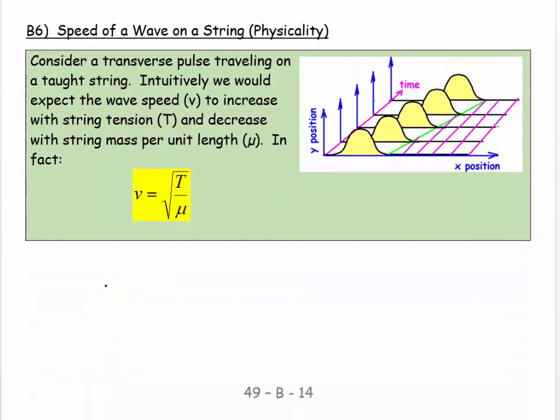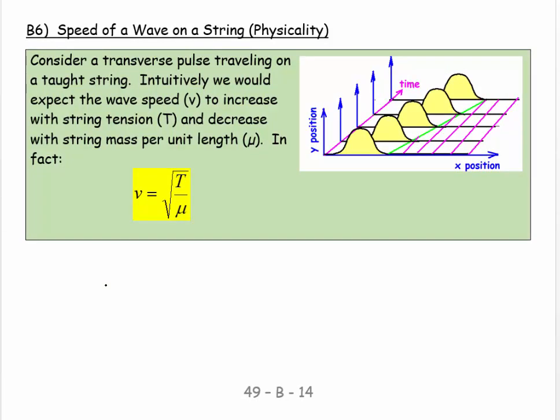We're going to look at a wave going along a string. I'm showing it as a pulse, but it need not be. It could be anything. And it's going along this wire, this string, and at beginning time it's near the beginning and then as time passes it goes further and further down. We say consider the transverse pulse traveling on a taut string, intuitively we would expect the wave speed V to increase with the tension and decrease with string's mass per unit length, which we call mu.